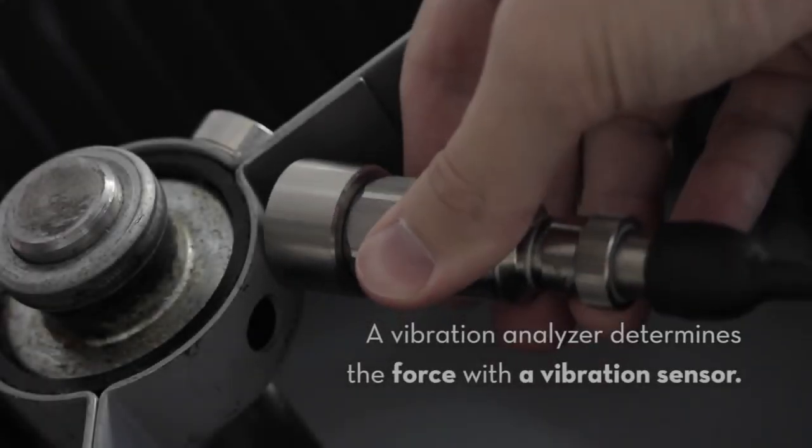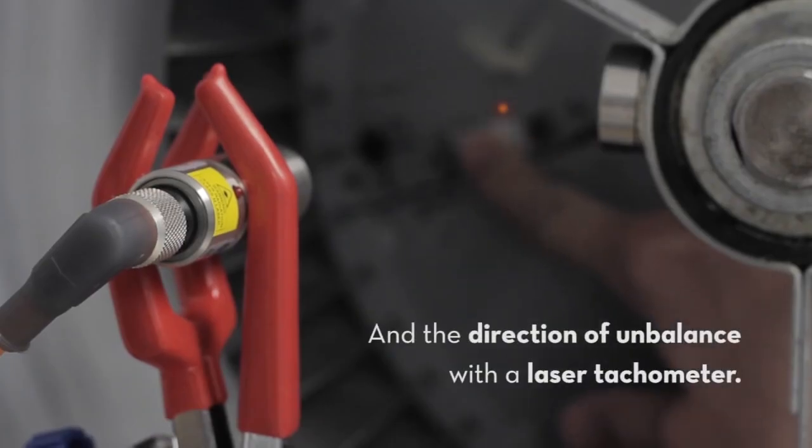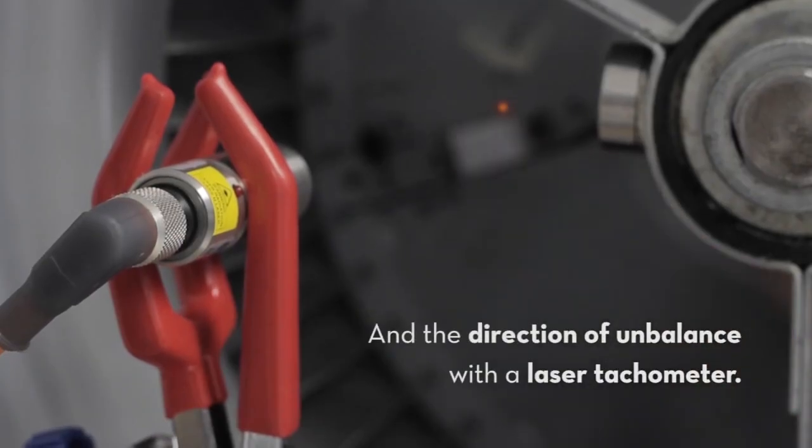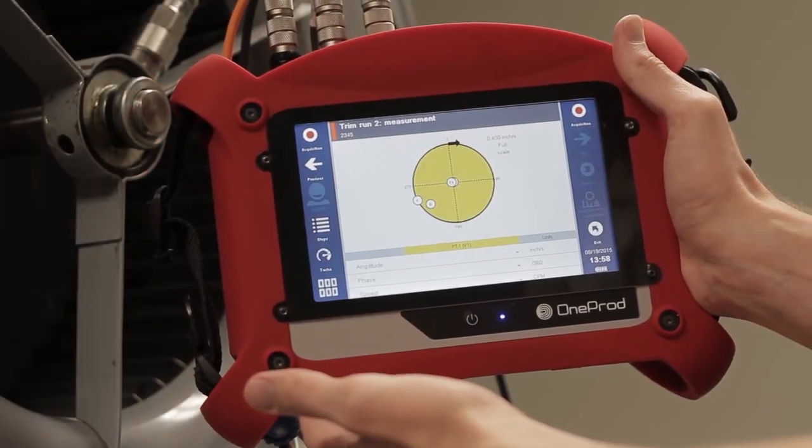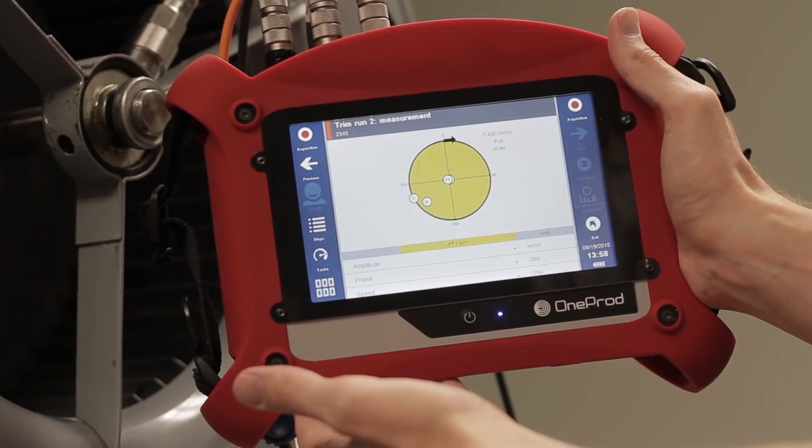A vibration analyzer determines the force with a vibration sensor and the direction of unbalance with a laser tachometer. Once these two factors are determined, the analyzer walks you through the process of correcting unbalance.